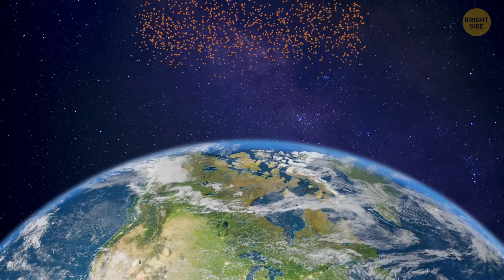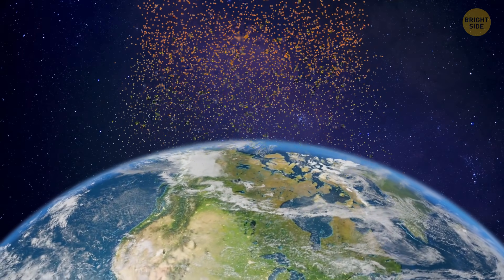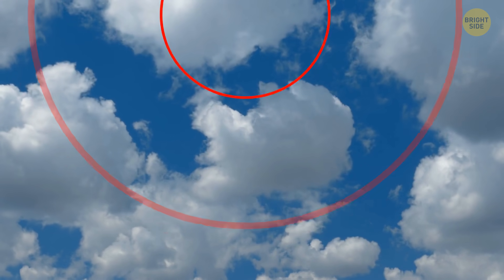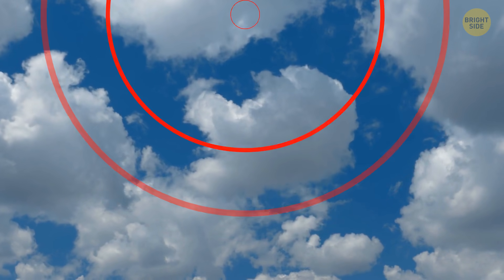When these high-energy particles hit the atmosphere, they go wild, causing all sorts of chaos. They ionize the atmosphere, creating a ginormous electromagnetic pulse.